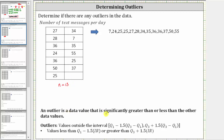An outlier is a data value that is significantly greater than or less than the other data values. Before we determine the outliers, though, we do need to discuss the methods used to determine quartile one, quartile three, as well as the outliers.